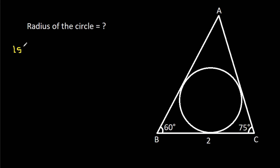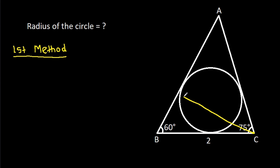For the first method, we draw a perpendicular from C onto AB. We call this point D, so CD is perpendicular to AB. This is our construction.